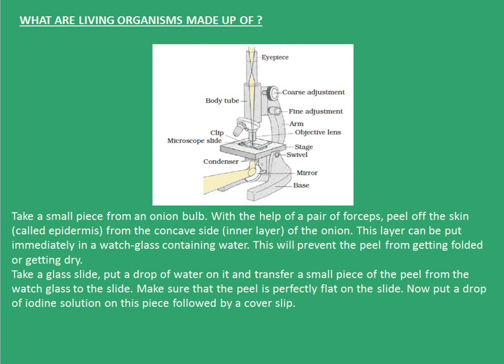So what are living organisms made up of? To answer this question, we need to do a small activity. In this activity, we will take a small piece of onion bulb and with the help of a pair of forceps, we'll peel off the skin, also called the epidermis, from the concave side, which is the inner side of the onion. This layer can be put immediately in a watch glass containing water to prevent the peel from getting folded or dry. Then we take a glass slide, put a drop of water on it, transfer a small piece of peel to the slide, and put a drop of iodine solution on it followed by a cover slip.